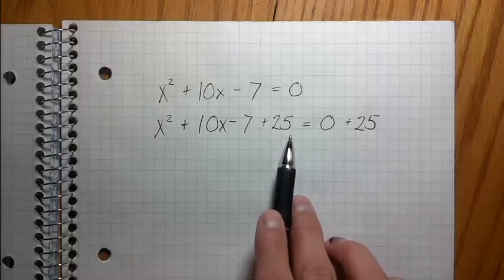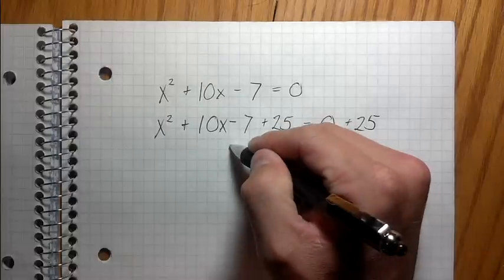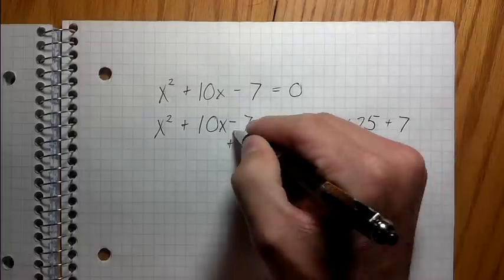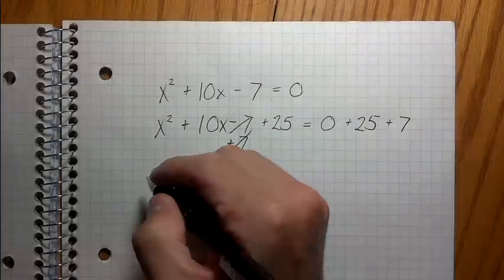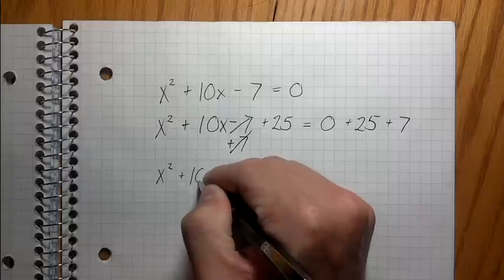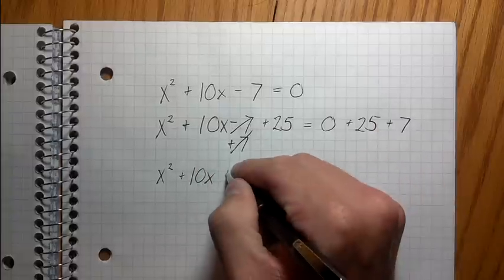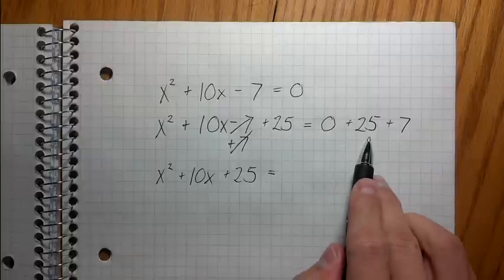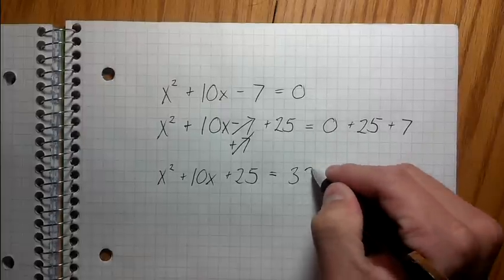Alright, so now that I put this 25 here, I'm gonna get rid of this negative 7. So I'm just gonna go plus 7, plus 7. This is gonna go away, so I'm gonna rewrite this equation. I have x squared, plus 10x, plus 25, equals 0, plus 25, plus 7, equals 32.